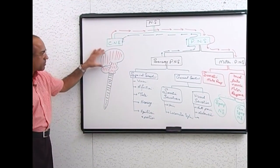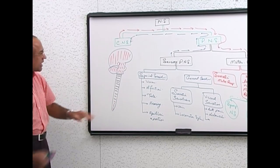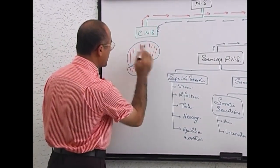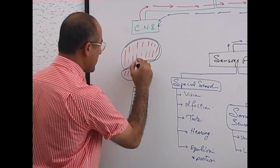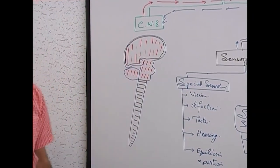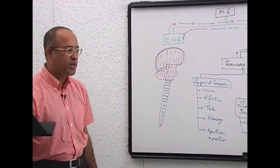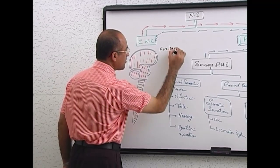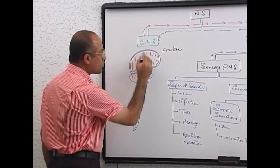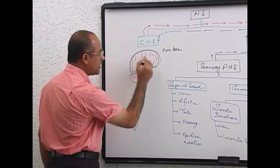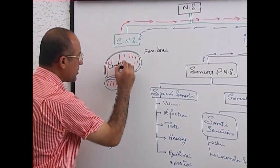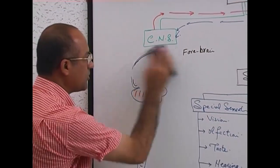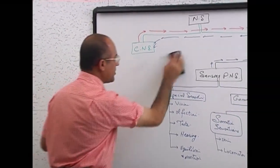We discussed that the central nervous system has a brain and spinal cord. Now let's discuss an important part of the brain — this part is called the forebrain. In the forebrain, this superficial area is called the cerebral hemisphere. Let me make a diagram from the frontal view, as that will make it more clear.